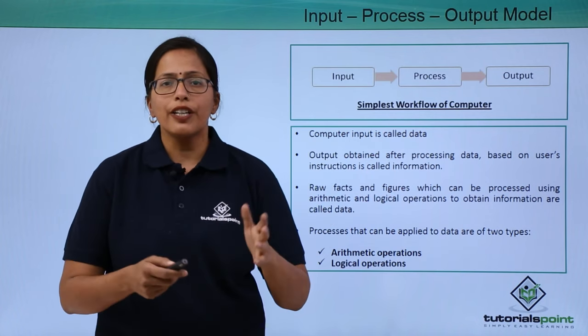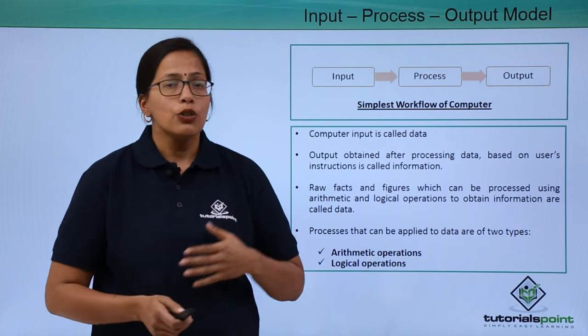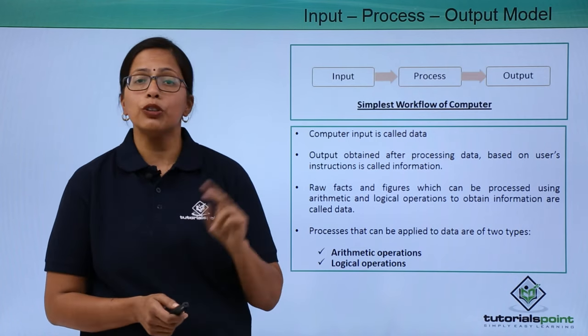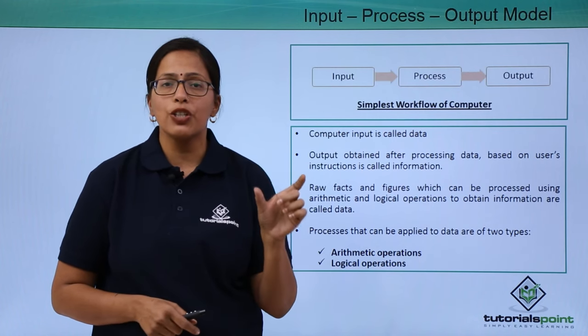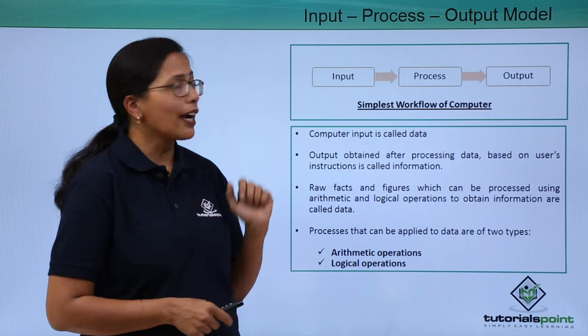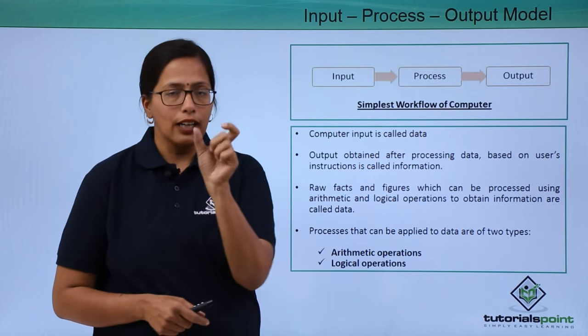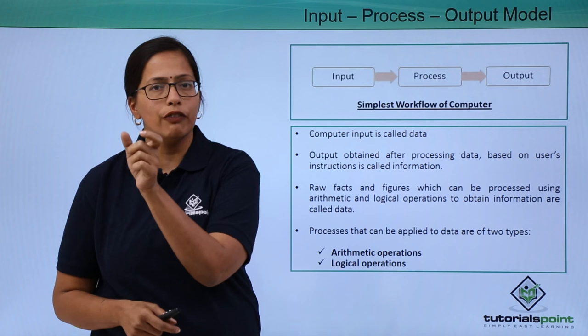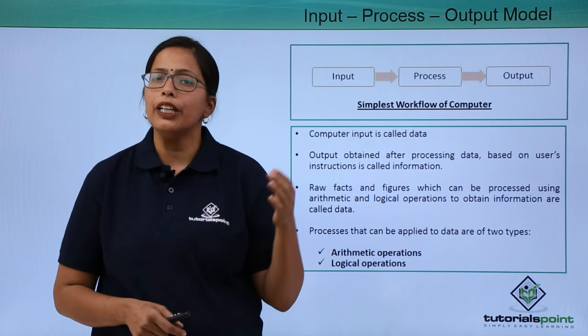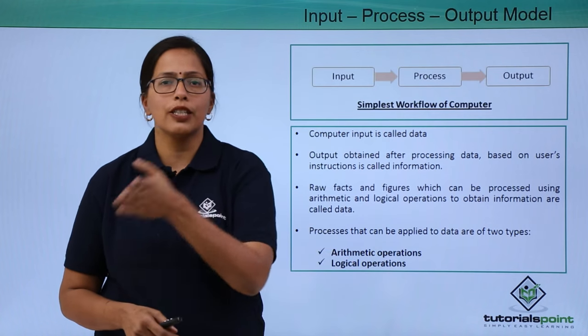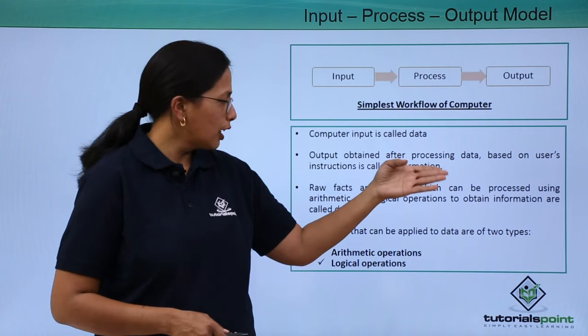Let's take a small example. For example, I want to add two numbers, say two plus three. So what will I input? I will input the two numbers two and three, and I will input the arithmetic operation that I want to do, which is addition. What is the process that will be done by the computer? Addition. Two plus three will be done by the computer and what is the output that will be given to us? It will be five. So two plus three equals five. This whole process has been done by the computer.